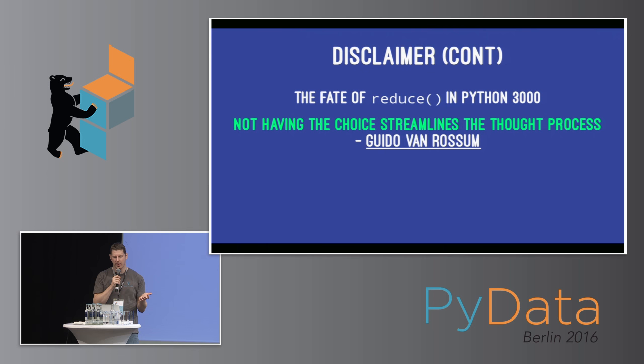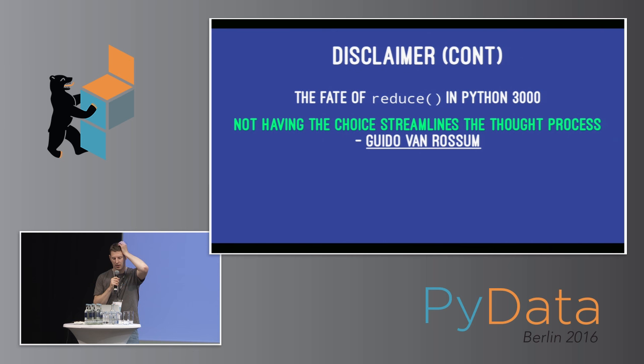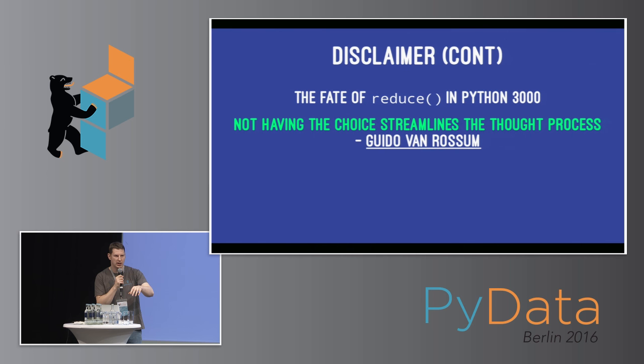That goes so far that in 2005, Guido van Rossum proposed to remove reduce from the standard library. It was not removed — it was instead moved into the functools package. But what Guido said was: not having the choice streamlines the thought process. And that's something I very much disagree with. I don't want to have a language that forces me to think in a certain way. Rather, I'd like a language that supports me — when I solve a problem in my head, it should be as easy as possible to translate it at a high level into the solution. For me, functional programming really does that.